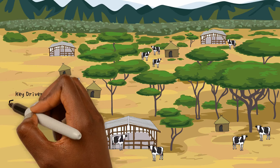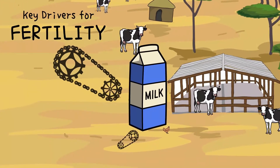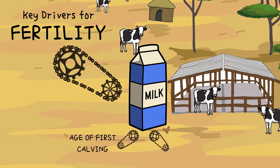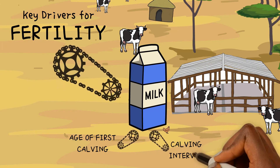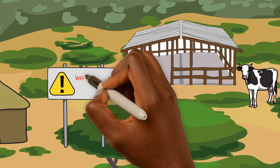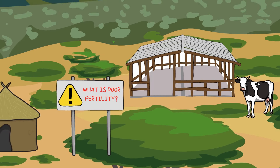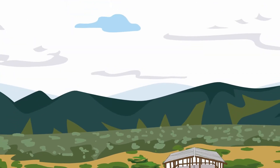The key drivers for fertility, and therefore milk production and the number of calves born, are the age at first calving of heifers and the calving interval. Poor fertility is having fewer cows calving than is desirable. When setting targets, they should be done in participation with groups of farmers, taking heed of constraints of resources, feed, and why animals are kept.